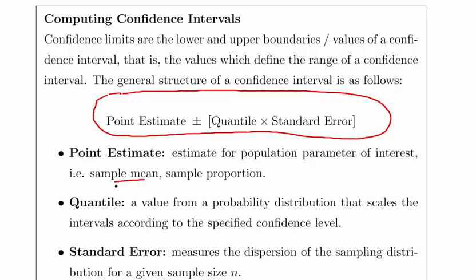So a point estimate plus or minus a quantile times a standard error. Now in this particular instance, what we're looking at is a sample mean, a quantile which is a value from probability distribution that scales the intervals accordingly, and then a standard error. The point estimate is fairly straightforward, we're actually given that in the question.